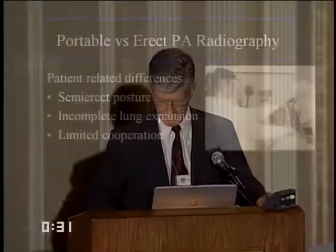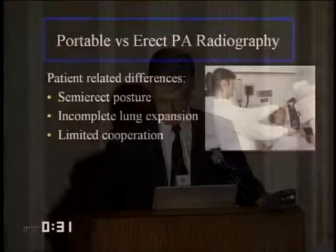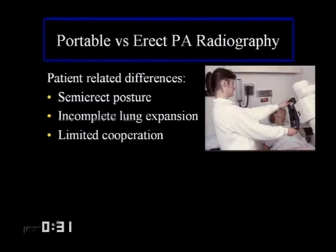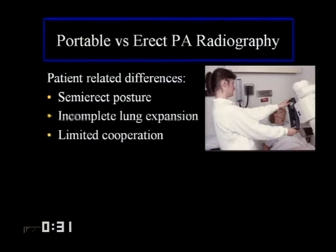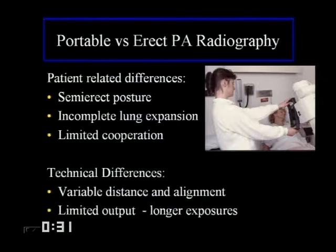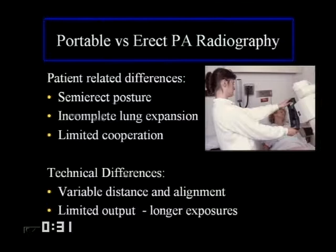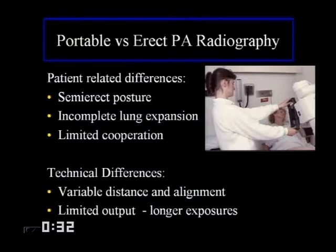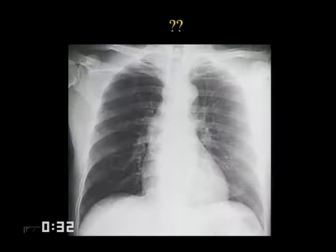There are basic differences between portables and erect chest x-rays. Many relate to the patient situation — not standing, generally in a sitting or semi-erect posture, not having well-expanded lungs, and often not able to cooperate. Then there are technical differences — not just characteristics of the machine itself, though it tends to have much longer exposures which can degrade image quality. A major problem is the variation in distance and alignment, because there's basically no connection between the x-ray tube and the receptor, whether digital or film screen. Consistency tends to be an issue.